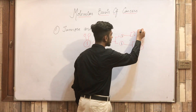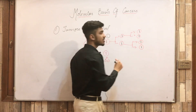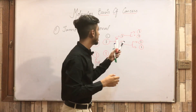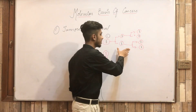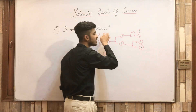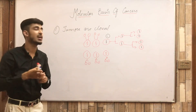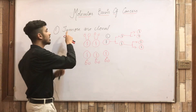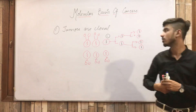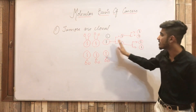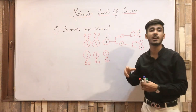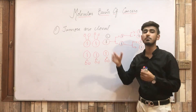This genetic material is passed on to the daughter cells, and they further pass on the genetic component. When these daughter cells were traced, we found that they all arise from a single cell in which the mutation occurred. That is why they are called clonal tumors — they all arise from a single clone, a single cell in which the mutation has occurred.